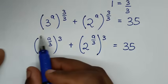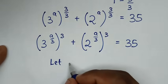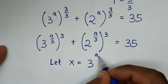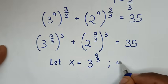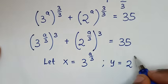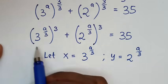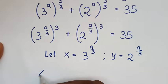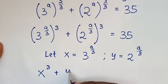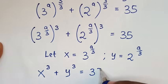In the next step, from inside the bracket, we let x equal to 3 power of a over 3, and y equal to 2 power of a over 3. So our equation will be x power of 3 plus y power of 3 is equal to 35.